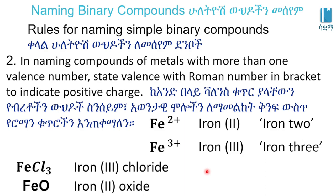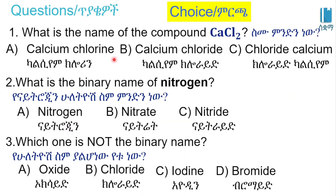Quiz question: What is the name of the compound CaCl? Option A: calcium chlorine. Option B: calcium chloride. Option C: chloride calcium. The answer is B — calcium chloride.